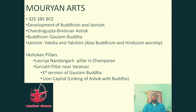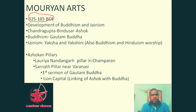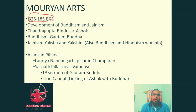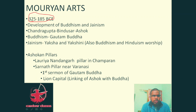Now we discuss Mauryan arts. The modern period spans from approximately 325 to 185 BC. During this period, Buddhism and Jainism also developed, as Gautam Buddha and Mahavira had already expanded their respective religions.